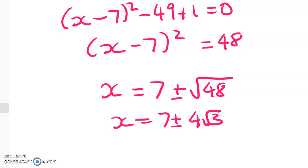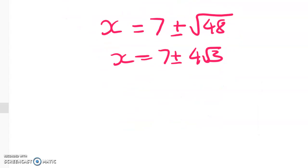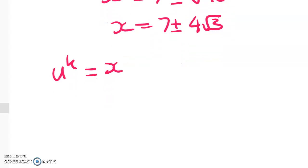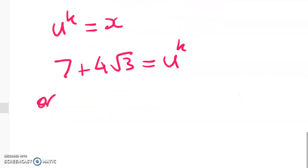Now remember that u to the power of k is equal to x. So we now have 7 plus 4 root 3 is equal to u to the power of k or 7 minus 4 root 3 is equal to u to the power of k.